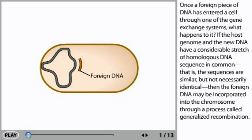Once a foreign piece of DNA has entered a cell through one of the gene exchange systems, what happens to it? If the host genome and the new DNA have a considerable stretch of homologous DNA sequence in common, that is, the sequences are similar but not necessarily identical, then the foreign DNA may be incorporated into the chromosome through a process called generalized recombination.